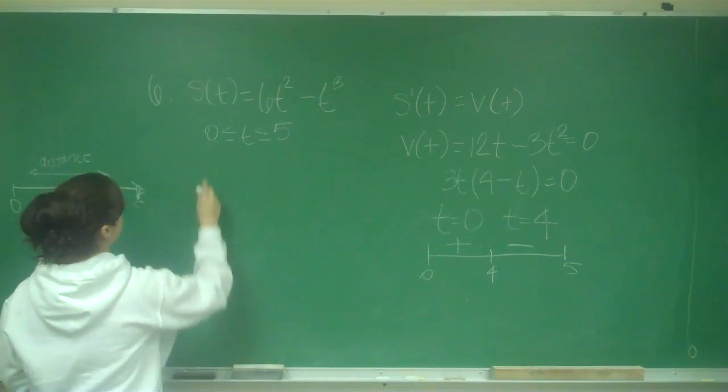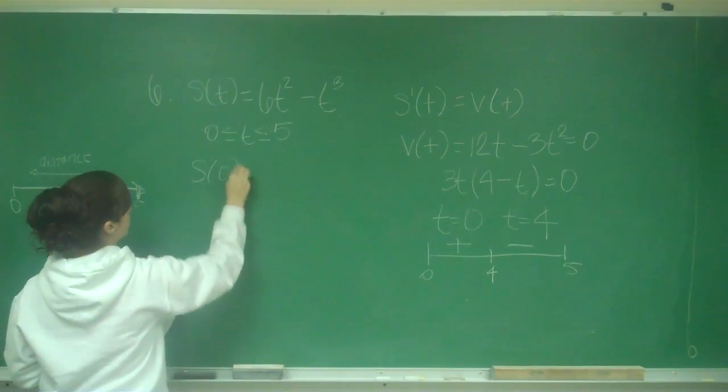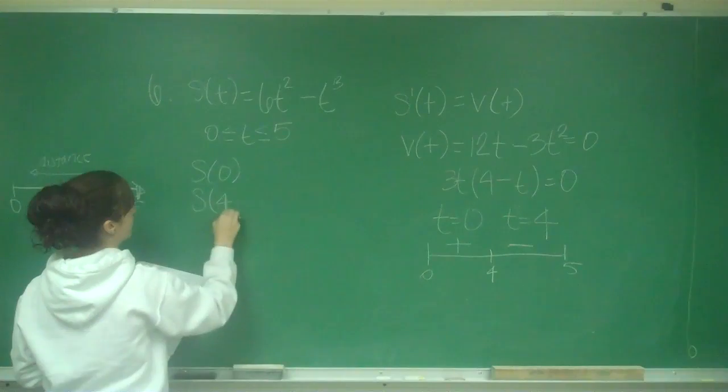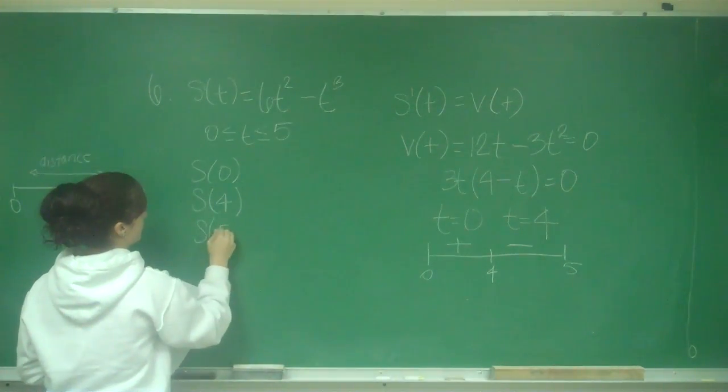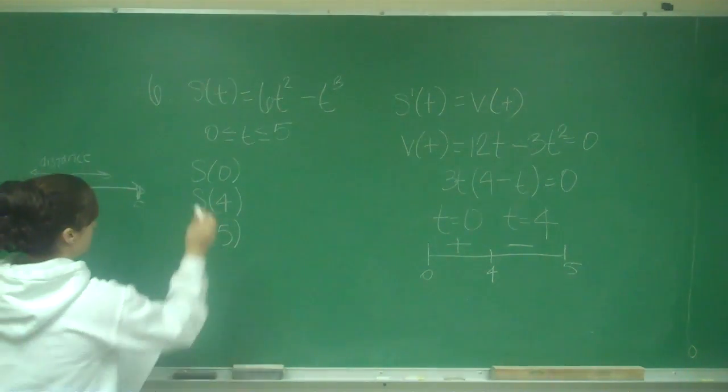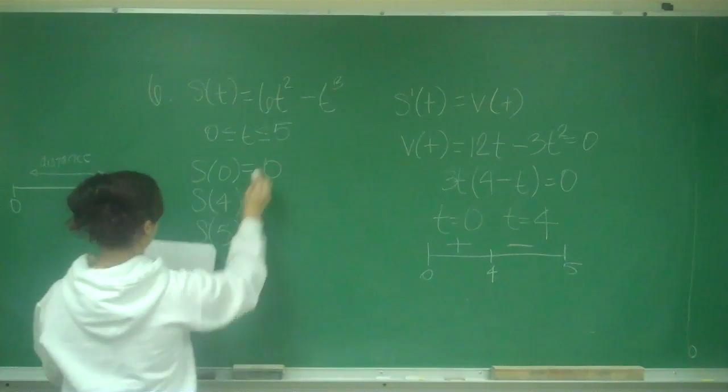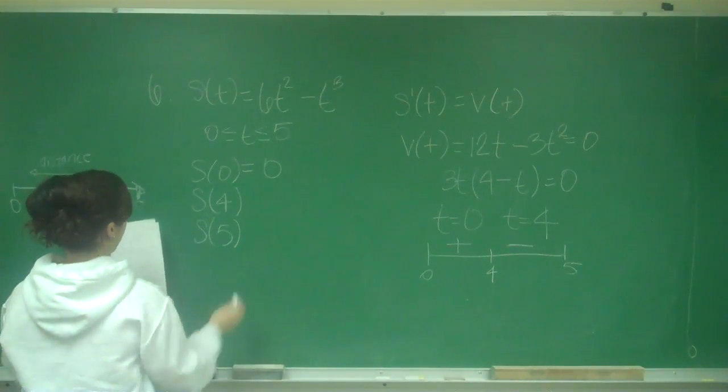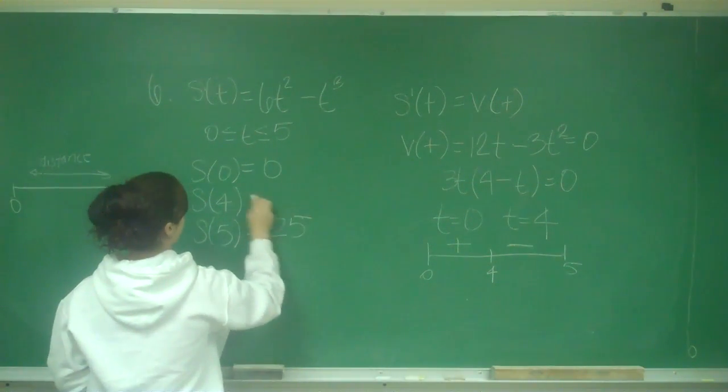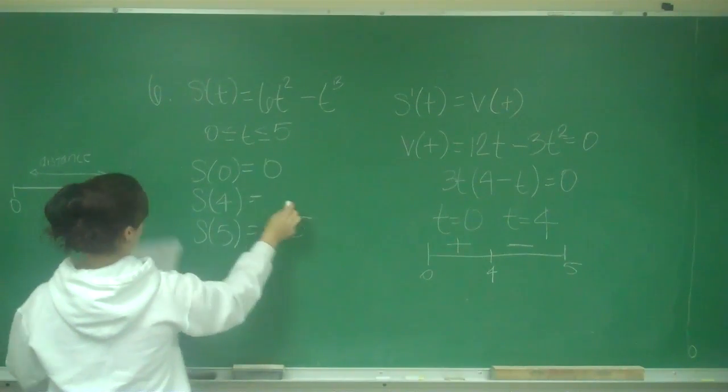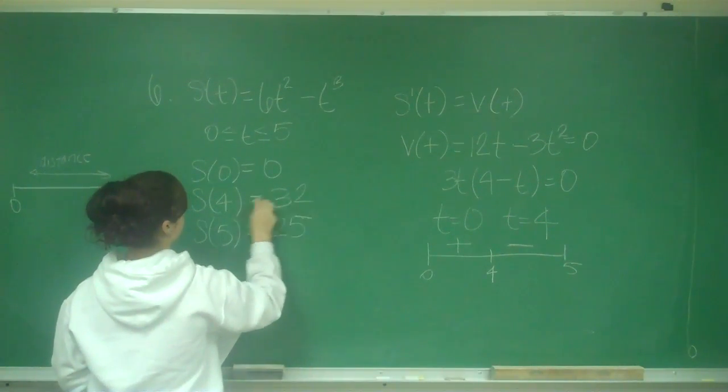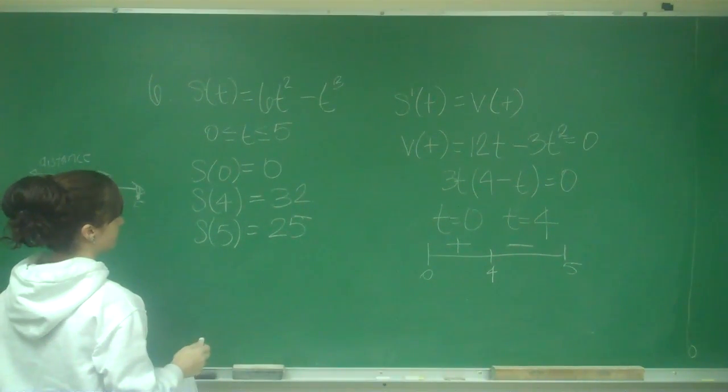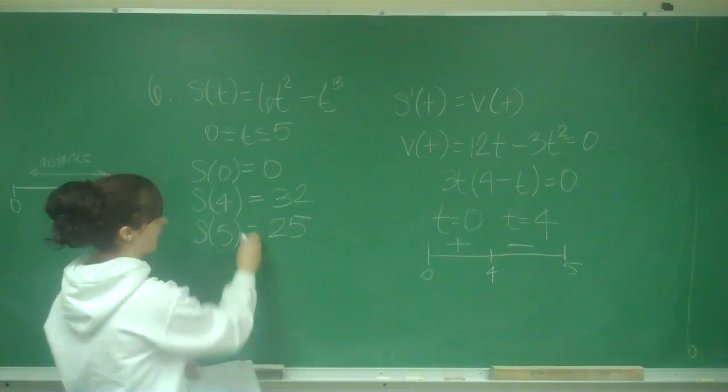So I need to find S of 0, S of 4, and S of 5. So we already said this was 0, and we said this was 25. And then S of 4 is just going to be 32.